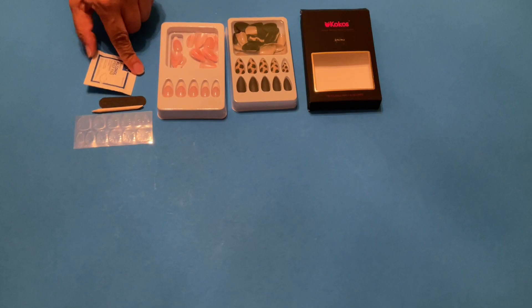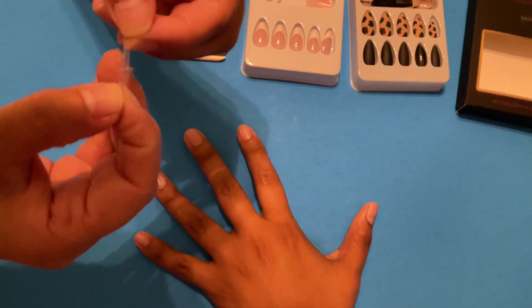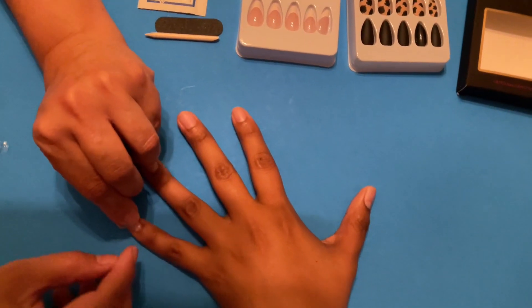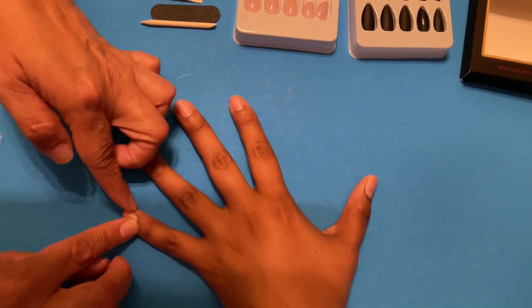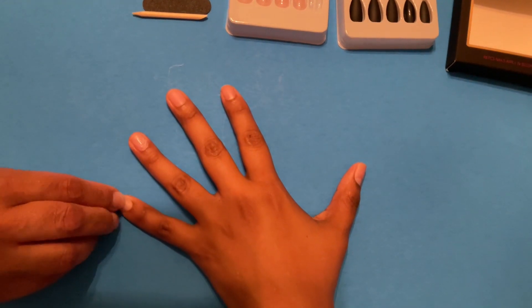Peel the plastic off the adhesive side and then stick it onto the nail like so. Then grab your little nail, which is this one, and put it on.